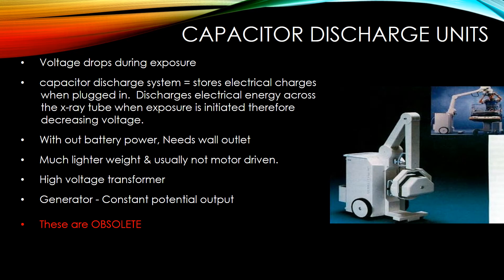Capacitor discharge units: the voltage drops during exposure. A capacitor discharge system stores electrical charges when plugged in and discharges electrical energy across the x-ray tube when the exposure is initiated, therefore decreasing voltage. Without battery power, it needs a wall outlet. These units are much lighter and usually not motor driven, so they were hard to push. They use a high voltage transformer with a generator with constant potential output. These are now obsolete.